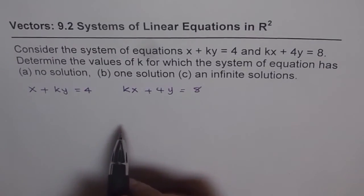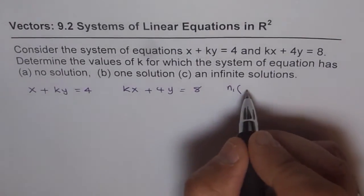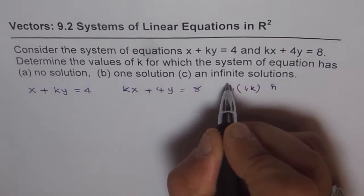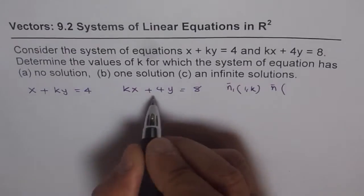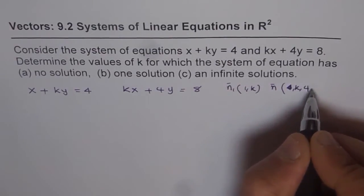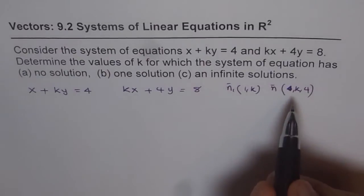What are the direction numbers here? We can say n₁ is (1, k) and n₂ is (k, 4). So that is what the direction numbers are. Now we want them to be exactly same.